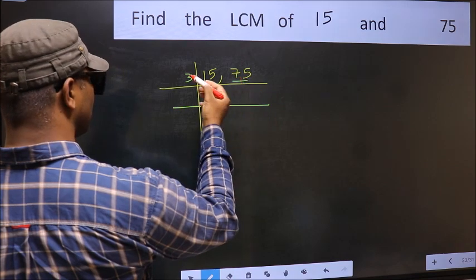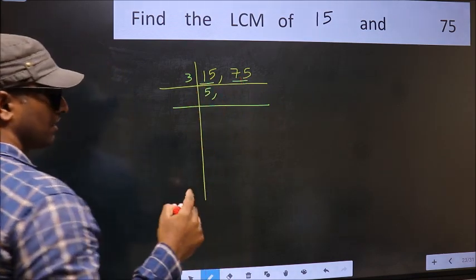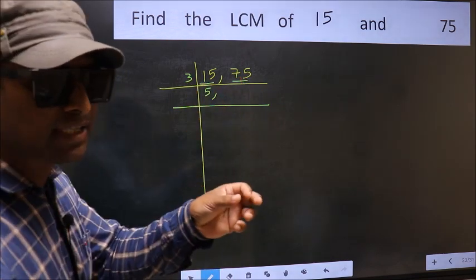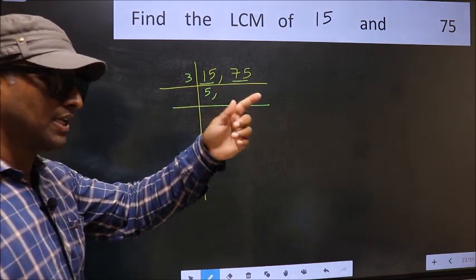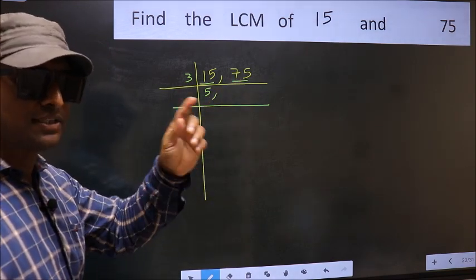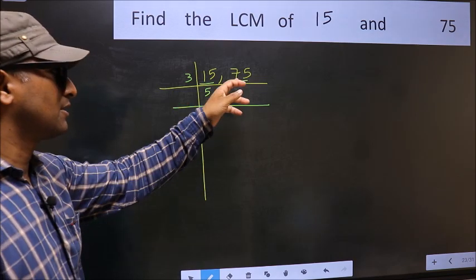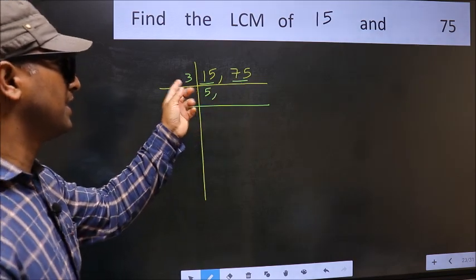To check whether 75 is divisible by 3 or not, add the digits. 7 plus 5, we get 12 and 12 is divisible by 3. So this number is also divisible by 3.